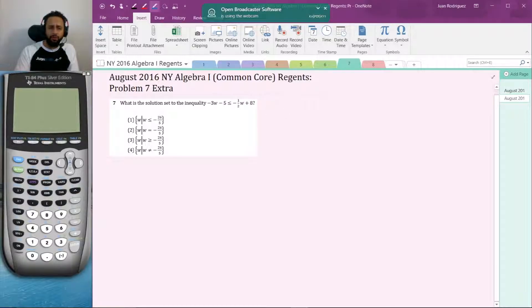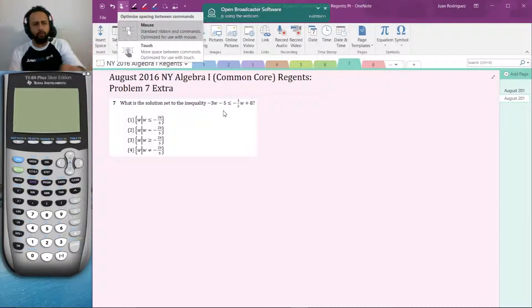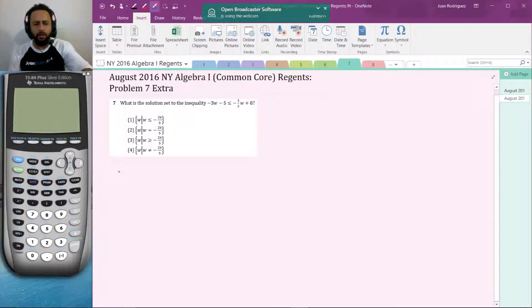Here's the solution to this question. What is the solution set to the inequality negative 3W minus 5 is less than or equal to negative one half W plus 8? So I'm going to go by a third method. I hope you paused and tried it on your own, but I'm going to go by the graphing method.